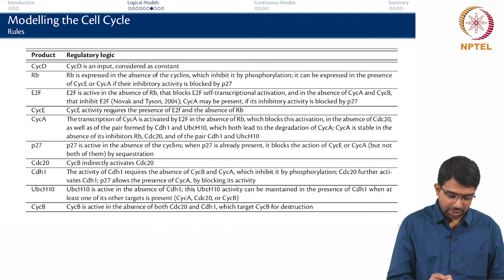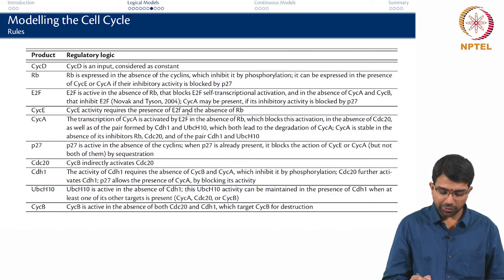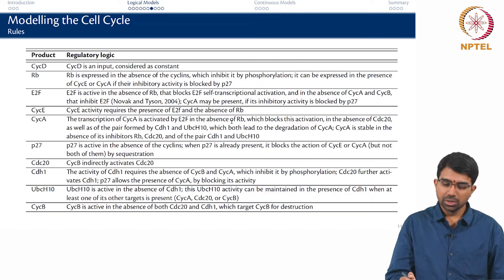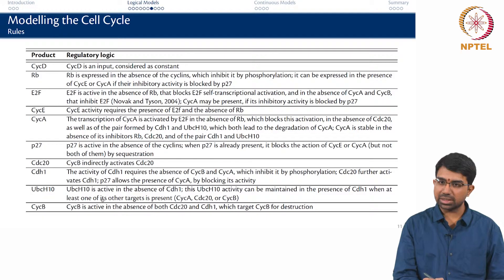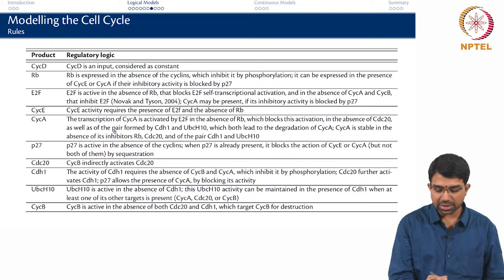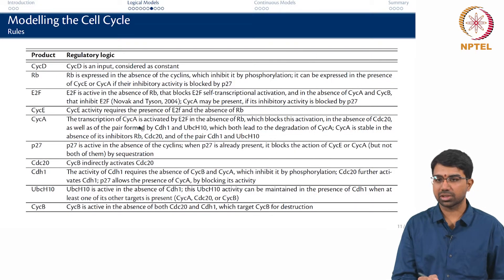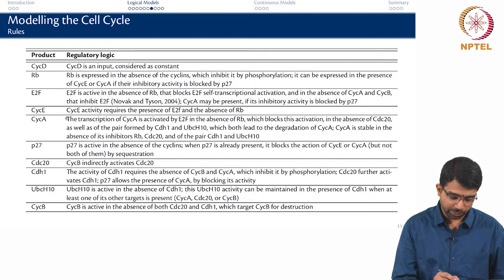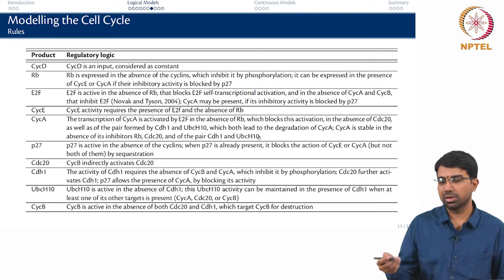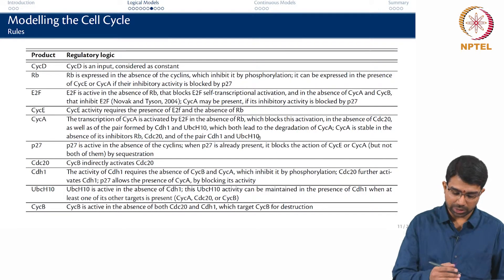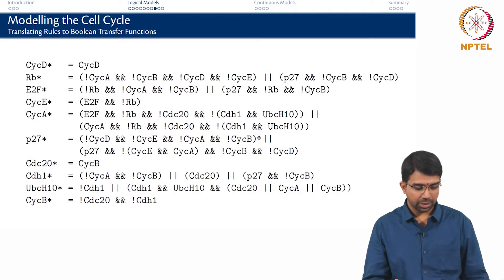Cyclin E activity requires the presence of E2F and the absence of RB. Once you write down these statements — which you get from the literature — each statement will have the backing strength of 3 or 4 papers describing these interactions. You take these statements and put them together, and you can then build rules.